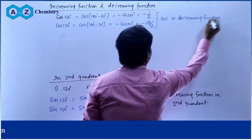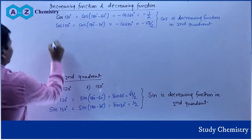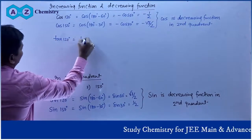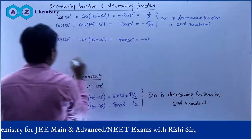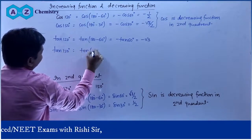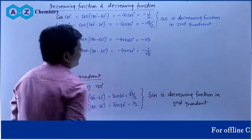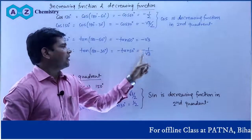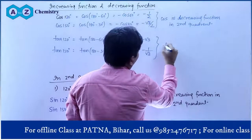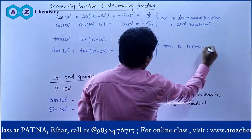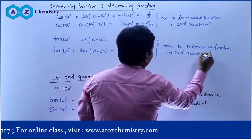Second quadrant mein tan ki baat karte hain: tan 120° = tan(180° - 60°) = -tan 60° = -√3. Tan 150° = tan(180° - 30°) = -tan 30° = -1/√3. Negative sign ke saath aap dekh sakte ho ki value -√3 se -1/√3 ho gayi — matlab angle badhne par value badhi. Isliye tan is an increasing function in the second quadrant.